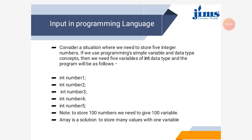To give input to a system or to any algorithm, we need to define some variables and give value to those variables, and those variables are used in programming or in an algorithm. So if there are two variables required to add two numbers and a third one is required to get the output, we need three variables to process addition of two numbers.